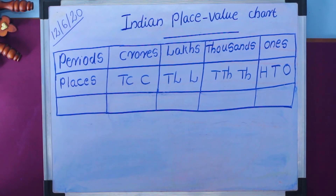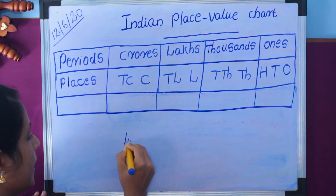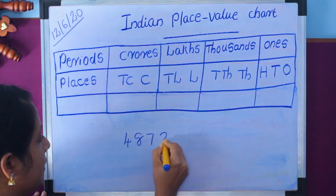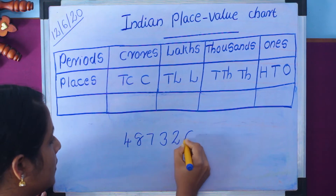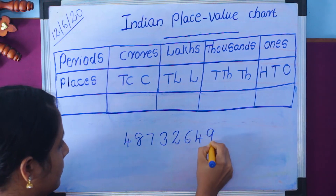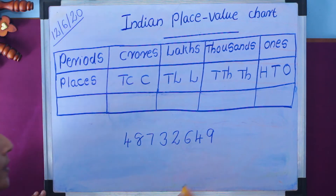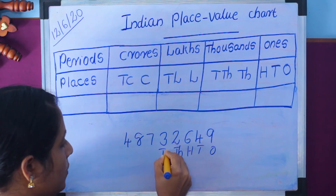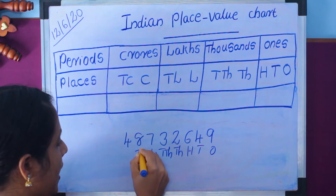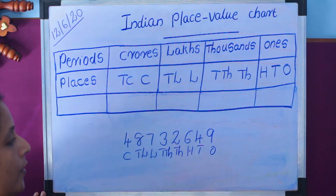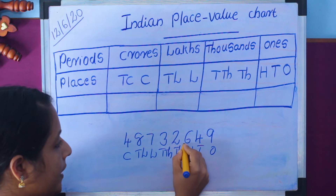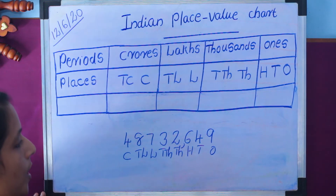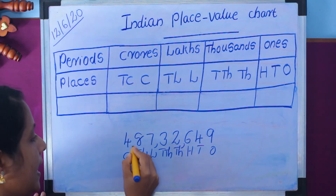Consider another example. Write the number 48732649. First, we write the place values: ones, tens, hundreds, thousands, ten thousands, lakhs, ten lakhs, crores. First comma comes after the hundreds place. Second comma comes after the ten thousands place. Third comma comes after the ten lakhs place.